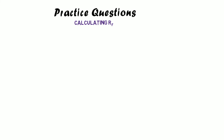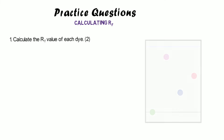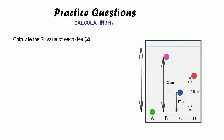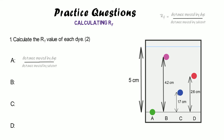Here are some practice questions. Question one: calculate the RF value of each dye in this chromatogram. We've got four separate dyes. First, measure how far the dyes have travelled: 4.2, 1.7, and 2.6 centimetres — and the solvent has travelled five centimetres. Use the equation distance moved by dye divided by distance moved by solvent. Pause the video and have a go.